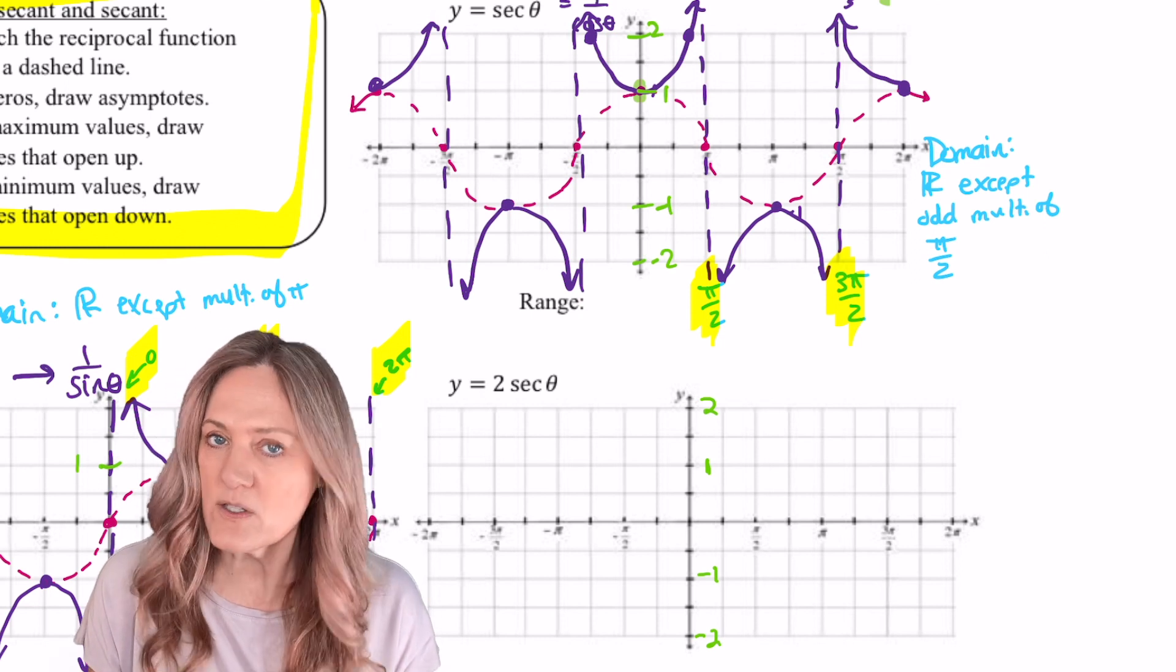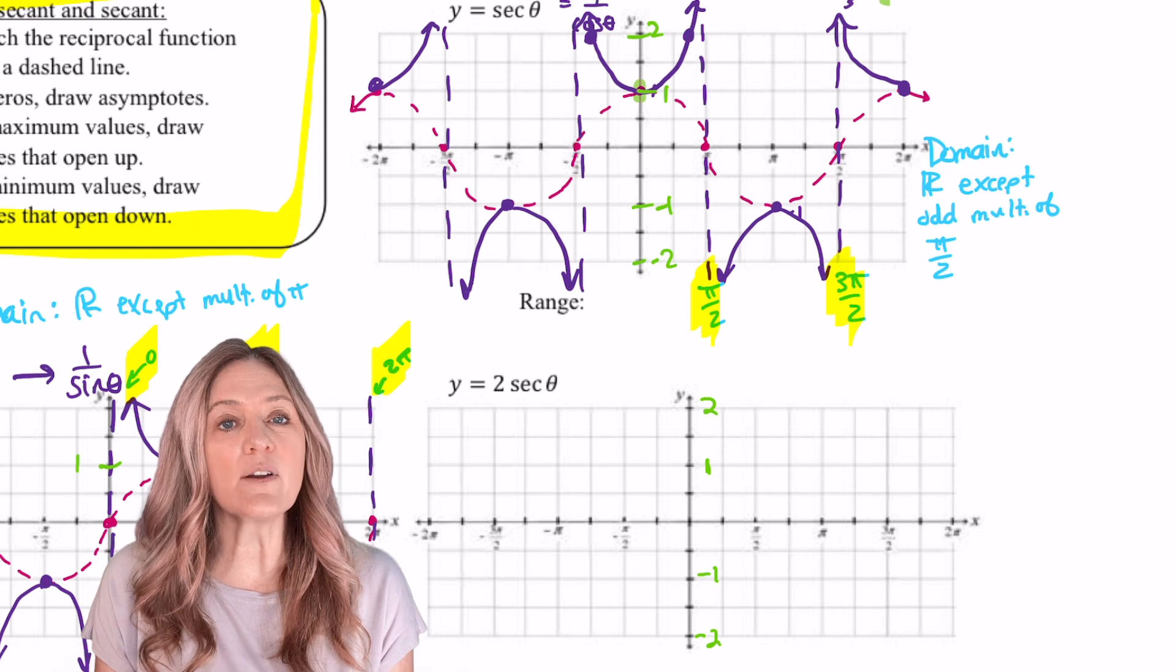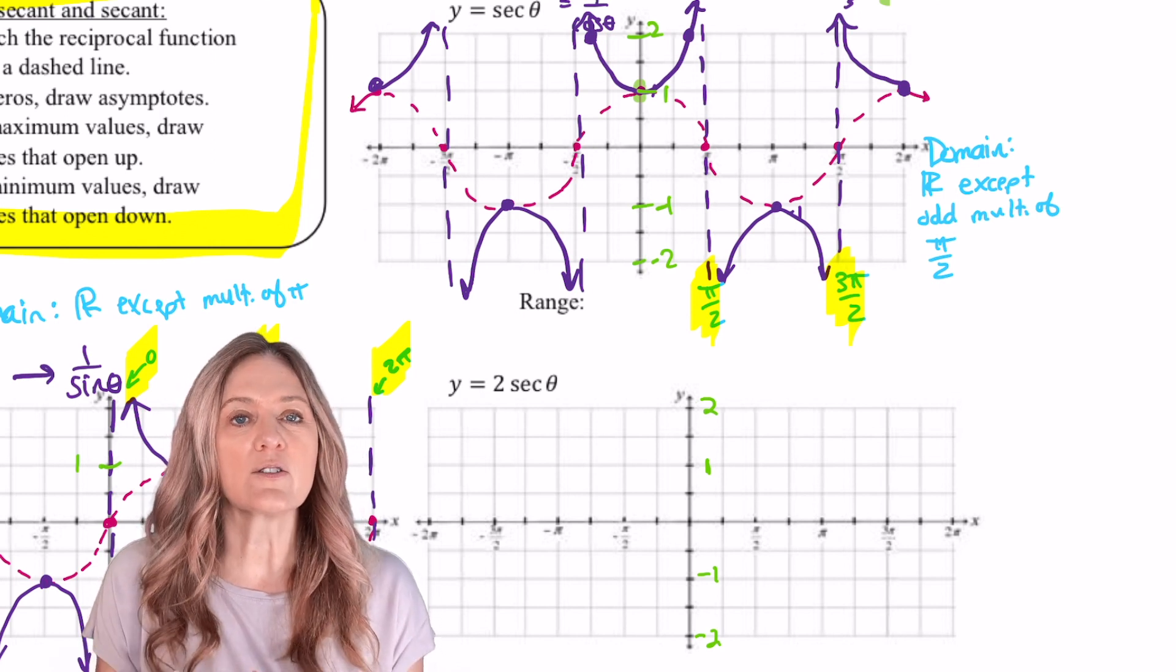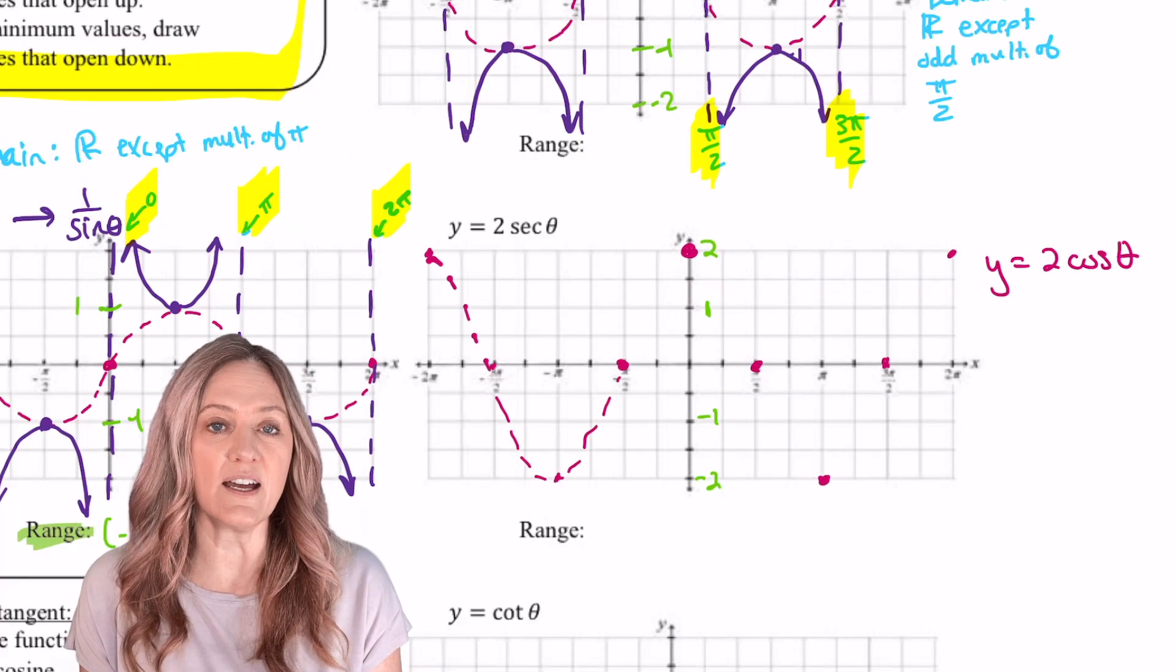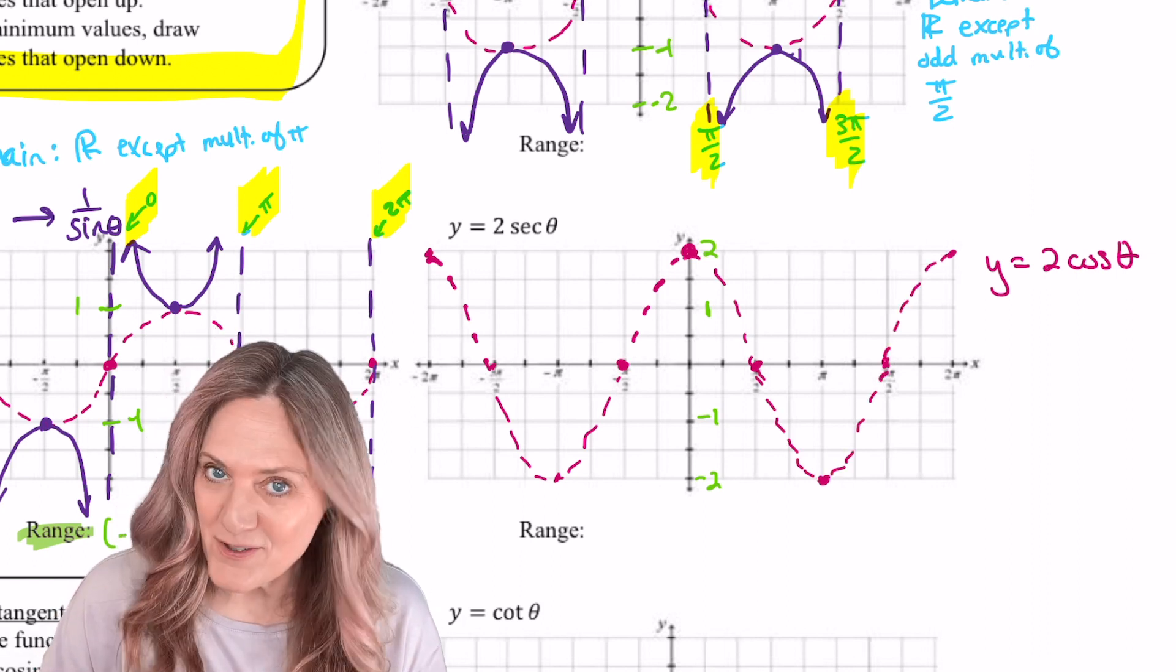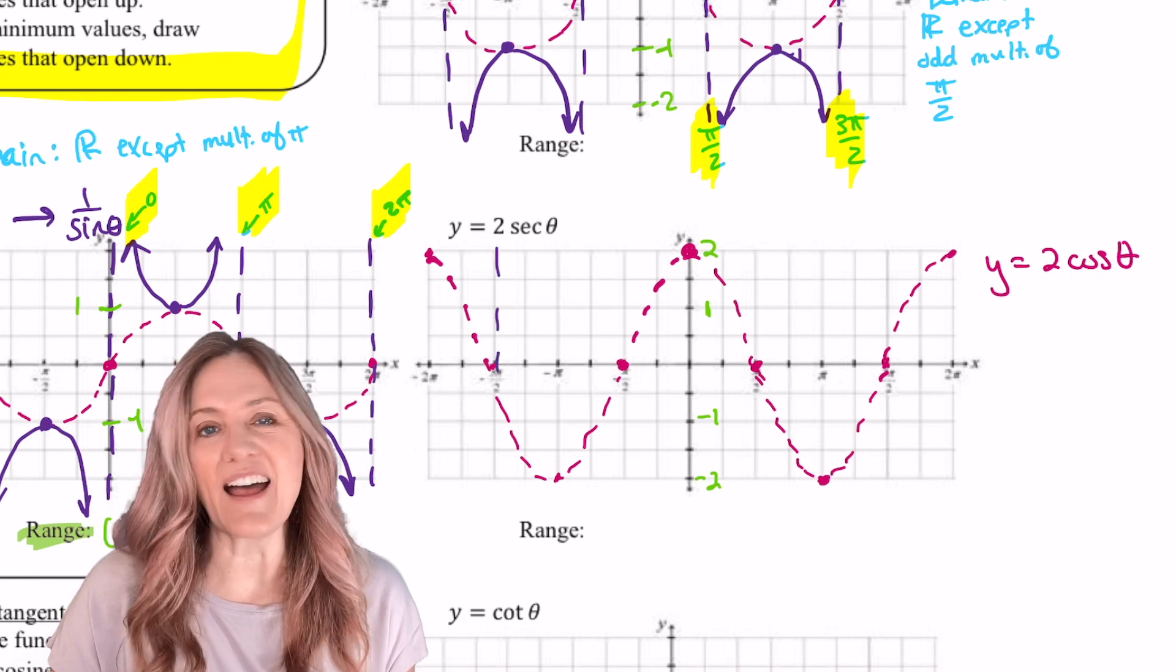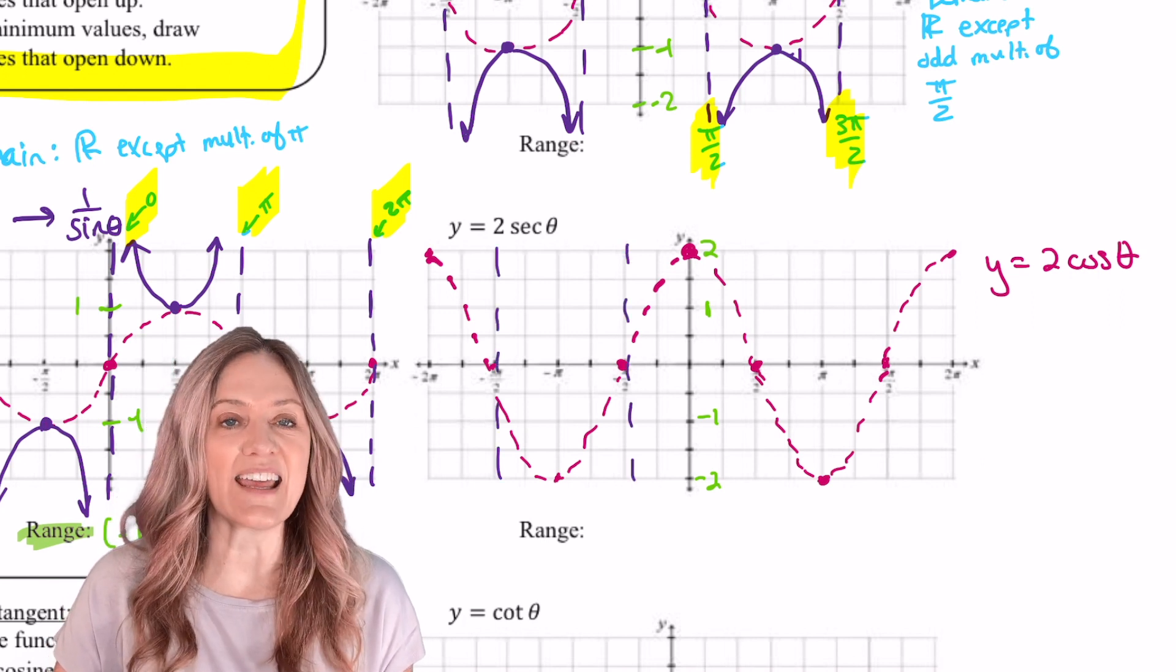Well, let's go ahead and graph cosine, but graph it with that vertical stretch. So I'm going to graph cos θ with a vertical stretch by a factor of 2. So the vertical stretch does not affect where cosine is 0. So the vertical asymptotes for secant will be at the same place.